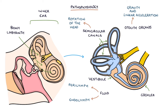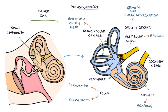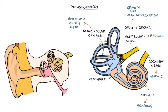The cochlea is responsible for hearing. The vestibular nerve transmits signals from the vestibular system — the semicircular canals and the vestibule — to the brain to help with balance. The cochlear nerve transmits signals from the cochlea to provide hearing. Together they form the vestibulocochlear nerve, which is the eighth cranial nerve.